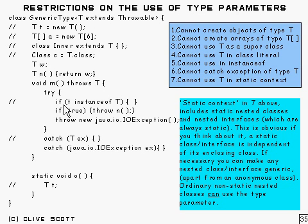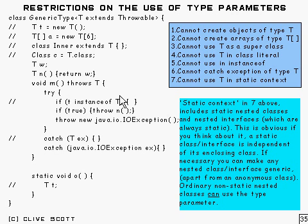The next thing you can't do is you can't use instanceof with T, because instanceof requires that you specify an actual type there, not a type parameter. You've actually got to put a type in there, not a type parameter, because it doesn't know which one you're talking about. That requires knowledge of the actual type at runtime, and you haven't got that available.